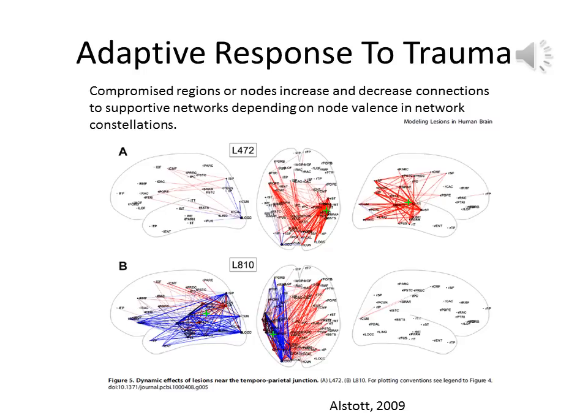Computerized models of lesions help to demonstrate this process in more detail. In section B of the image, the middle head map shows a lesion in the form of a green cross on the left side. The blue lines represent diminished intra-hemispheric connections resulting from the lesion as networks go offline for repair. The red lines from the contralateral hemisphere indicate increased connectivity as these networks take inhibitory control over the injured areas and also assist in processing.